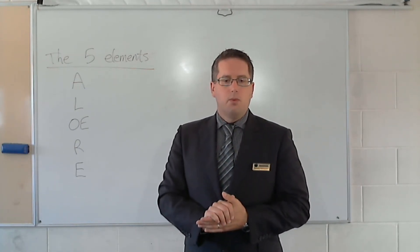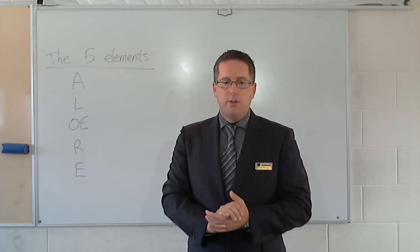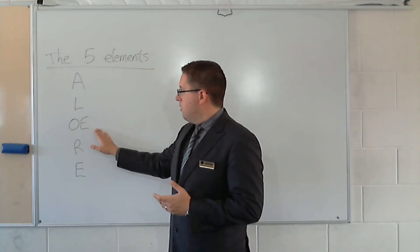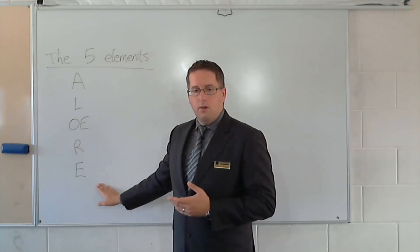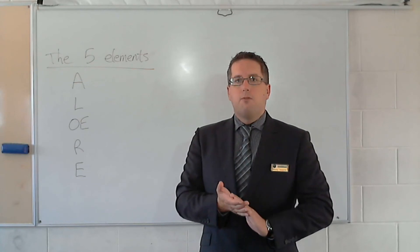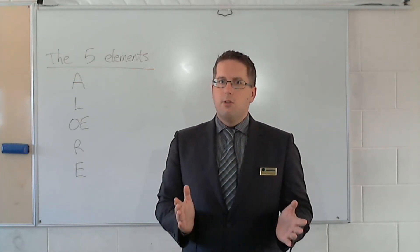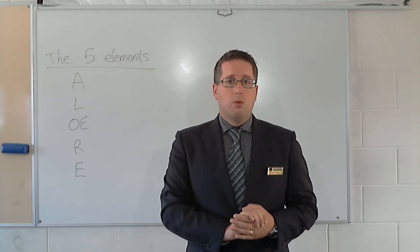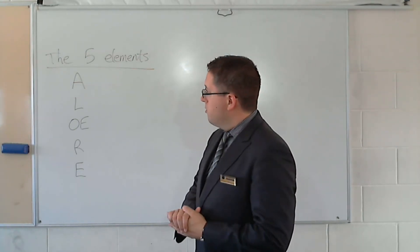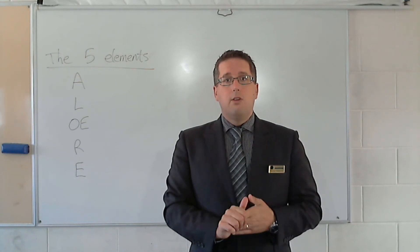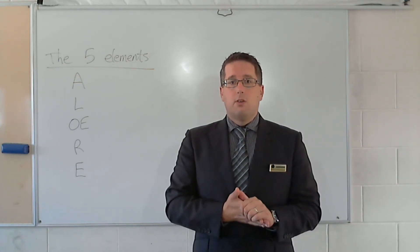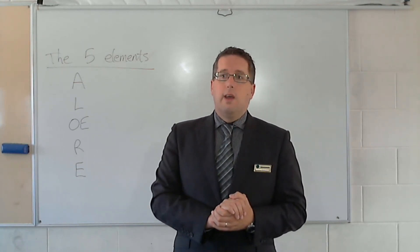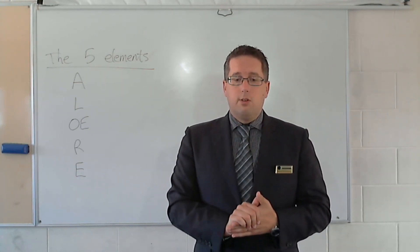These are the five main elements of accounting: assets, liabilities, owner's equity, revenue, and expenses. Whenever there's a transaction, it's going to impact one or more of these elements. When we record it, we need to know which element it goes to. We're going to look at each of these elements and define what each of them are.